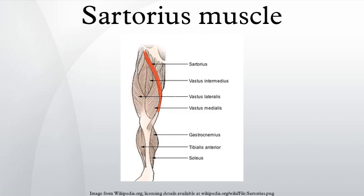Structure: the sartorius muscle arises by tendinous fibres from the anterior superior iliac spine, running obliquely across the upper and anterior part of the thigh in an inferomedial direction. It descends as far as the medial side of the knee, passing behind the medial condyle of the femur to end in a tendon. This tendon curves anteriorly to join the tendons of the gracilis and semitendinosus muscles, which together form the pes anserinus, finally inserting into the proximal part of the tibia on the medial surface of its body.